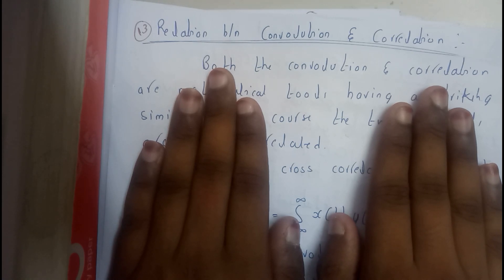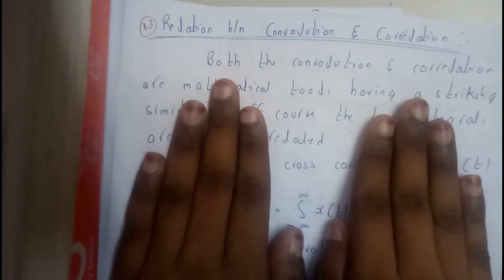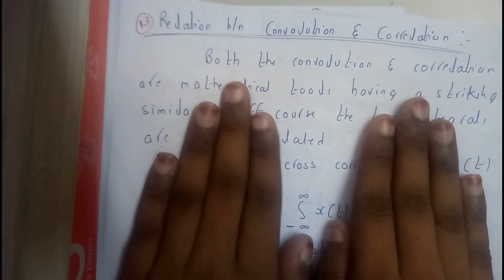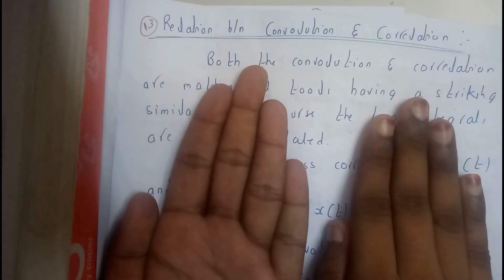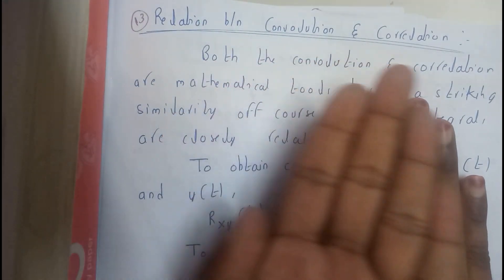Whereas the second step in convolution, you will be shifting one of the signals. So let me assume that I am shifting the first signal completely. And now I will be moving this signal from minus infinity to infinity.